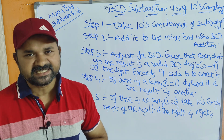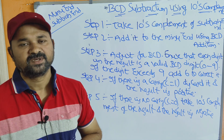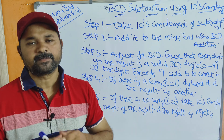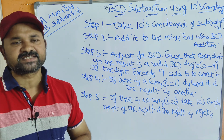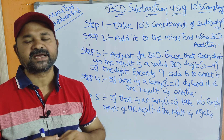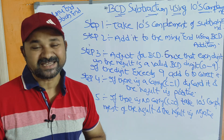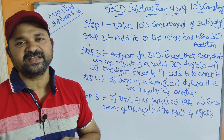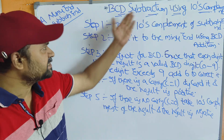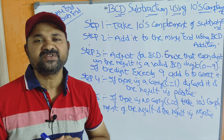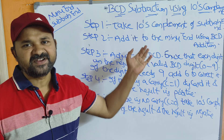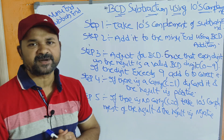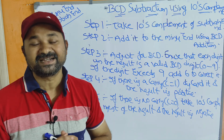Now let us discuss BCD subtraction. We can perform BCD subtraction in two ways. The first approach is the 9's complement, and the second one is the 10's complement. In the last video we saw how to perform BCD subtraction using the 9's complement. In this video we are going to discuss how to perform BCD subtraction using the 10's complement.